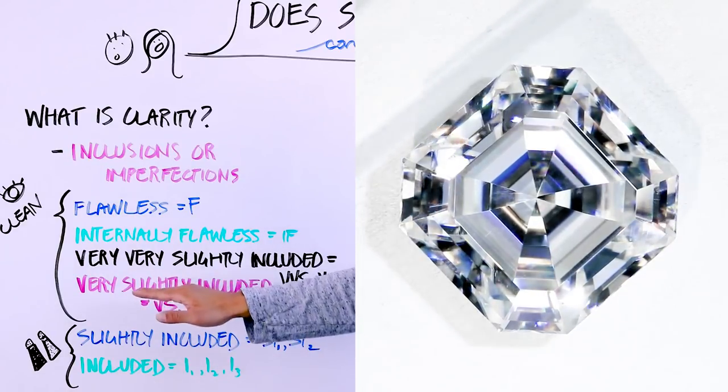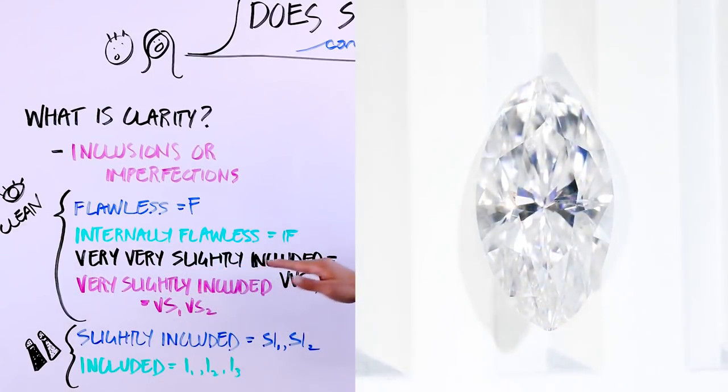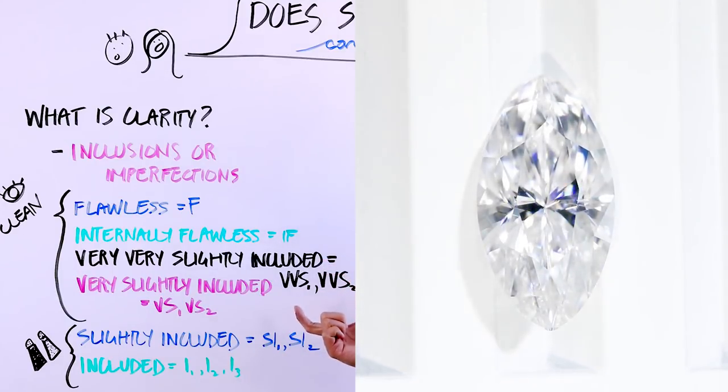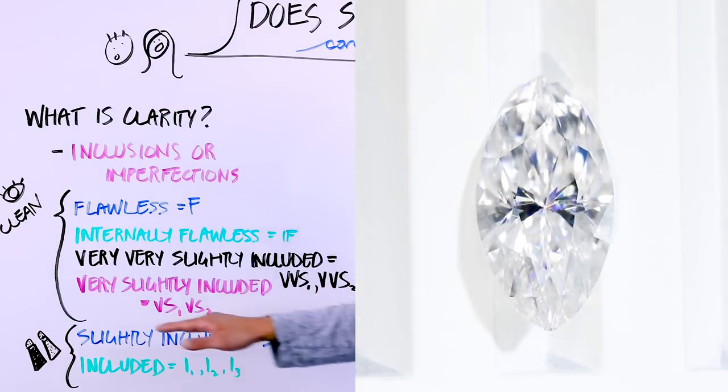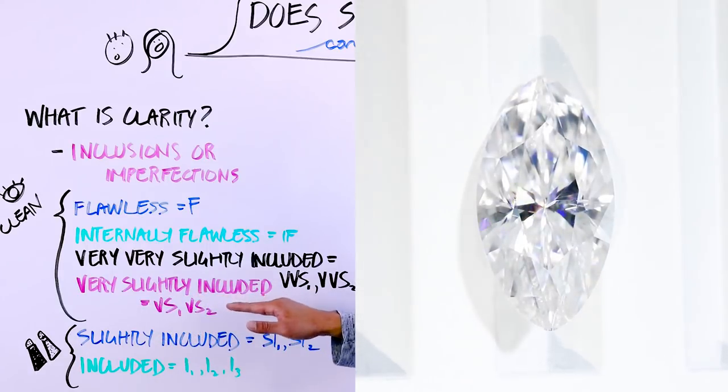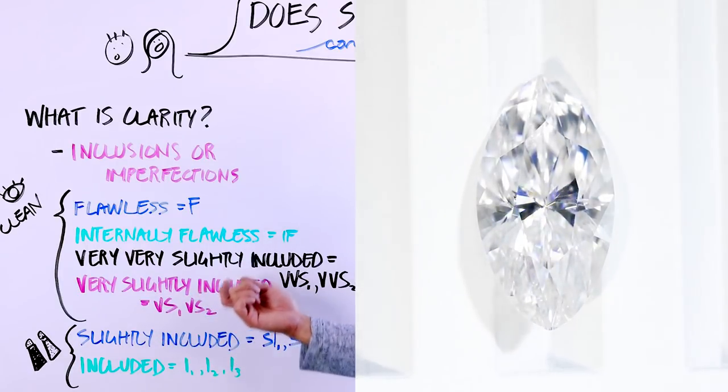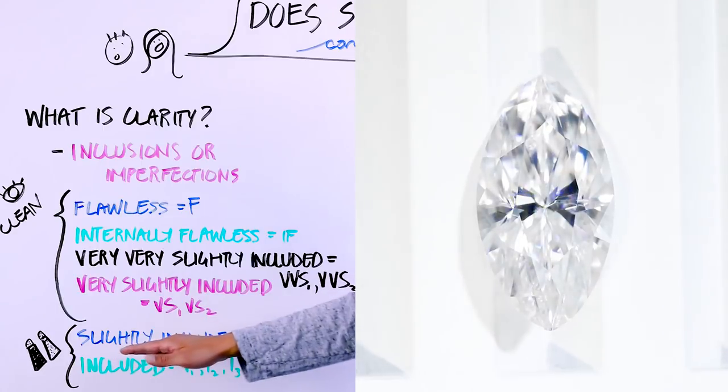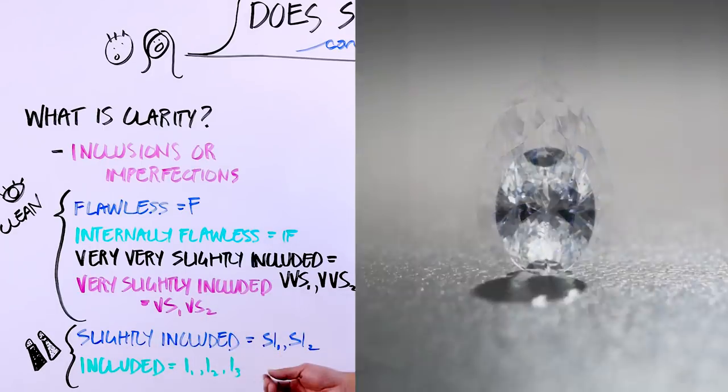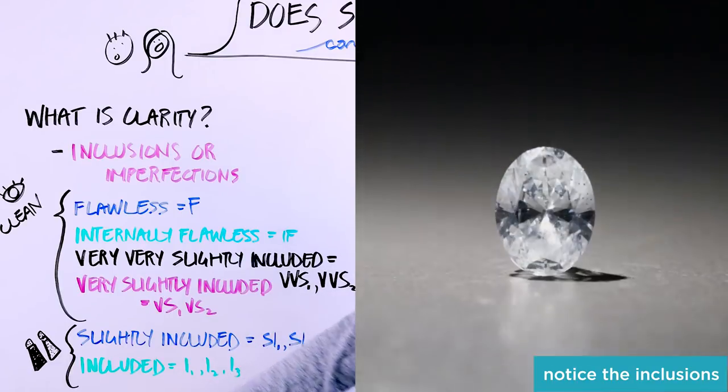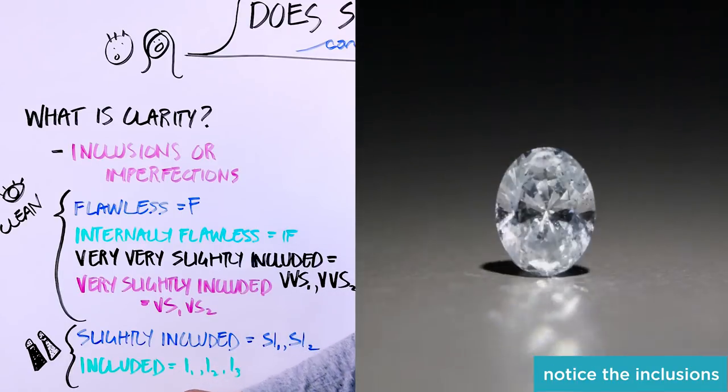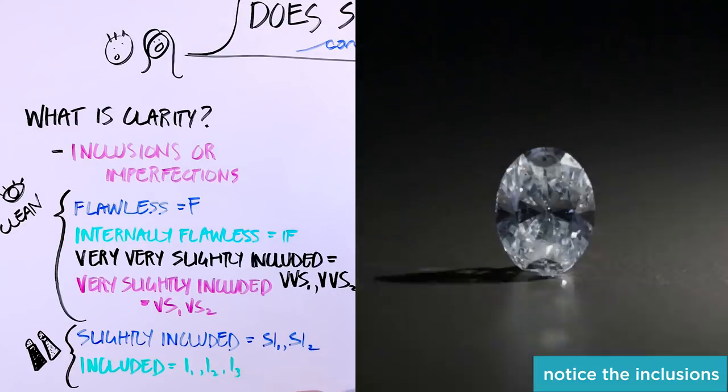So the next step down after that is very, very slightly included. And there are two tiers for this specific grade. It's called the VVS1 and a VVS2. So VVS2 is just slightly below VVS1. So the same for a very slightly included. There's a VS1 and a VS2. And then slightly included, which is an SI1 and an SI2. And then last but not least is included, which is an I1, I2, or an I3.